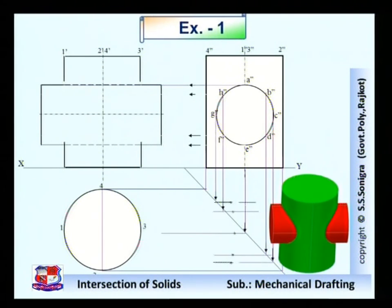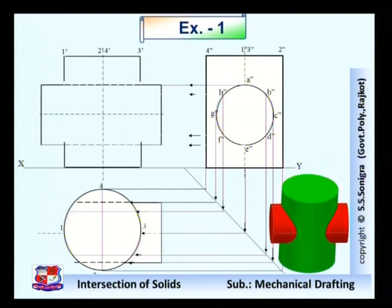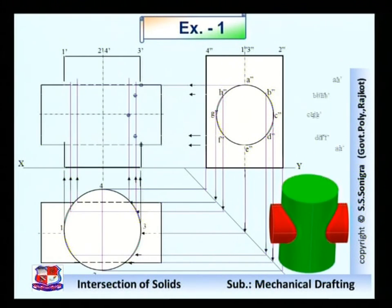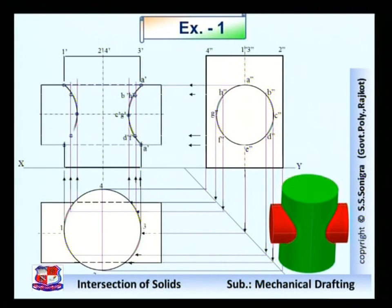Transfer all these points to the meter line, and from the meter line to the top view. From the top view, where these points with the meter lines cut the circle, draw straight vertical lines and find out the points of intersection. These are the points of intersection for both cases. Name the respective points.